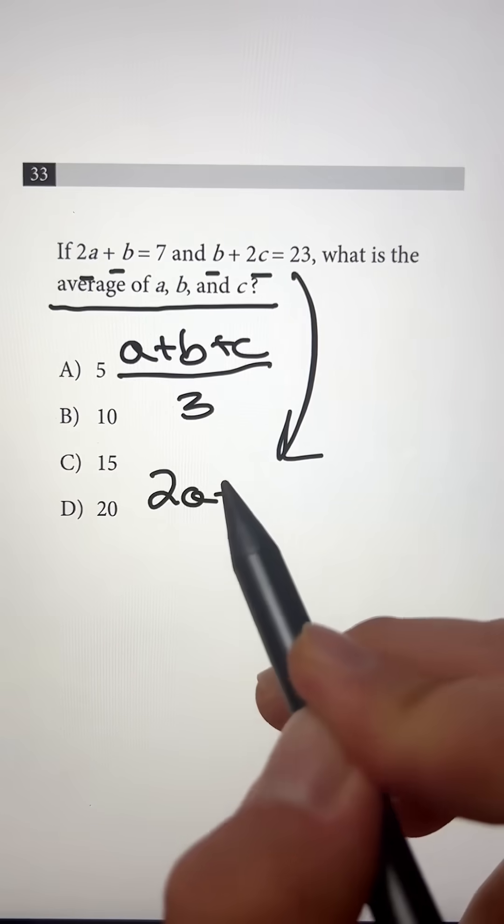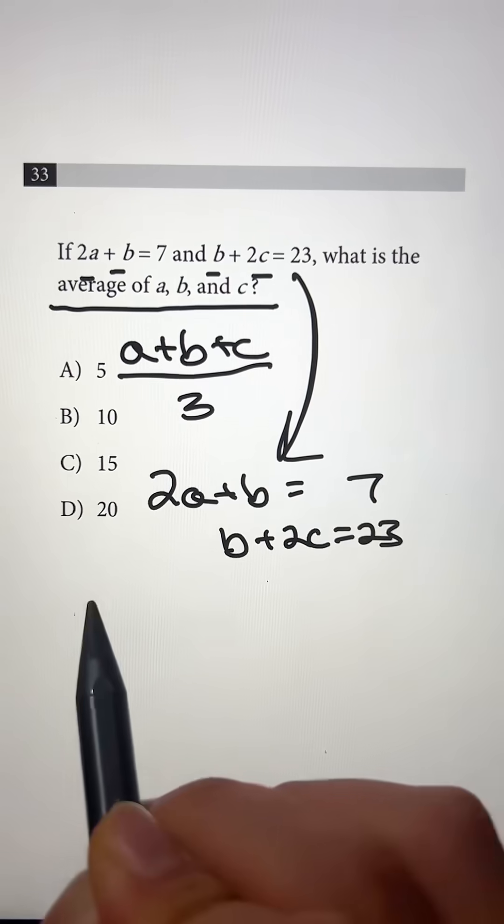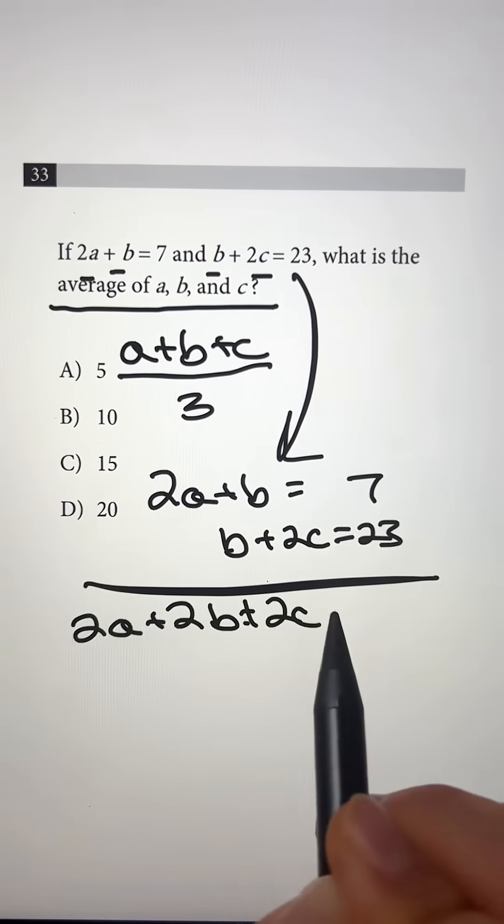So if we write it out, we have 2a plus b is equal to 7 and over here we have b plus 2c is equal to 23. Now if we add these two together, we get 2a plus 2b plus 2c is equal to 30.